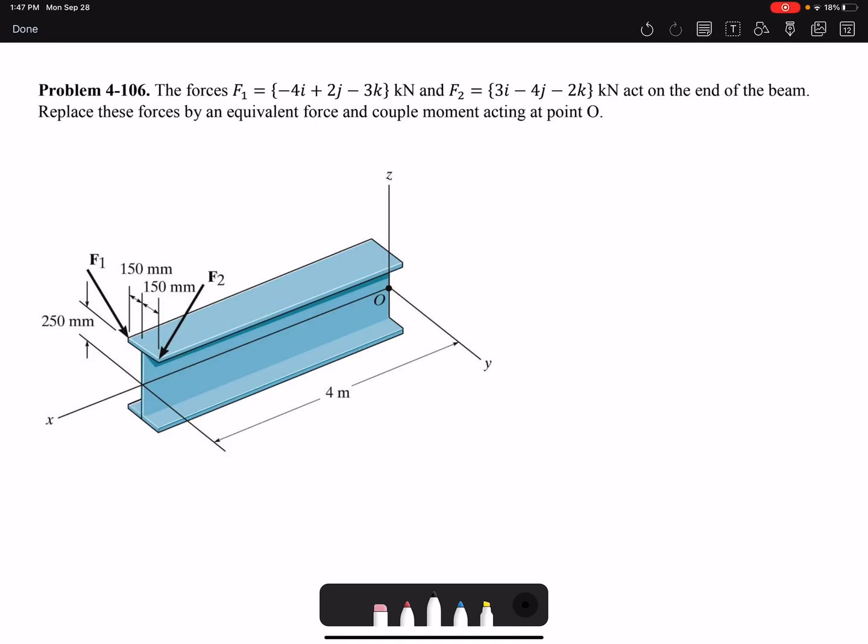Hello everyone, we are going to solve problem 106 of chapter 4. The forces F1 and F2 act on the end of the beam. Replace these forces by an equivalent force and couple moment acting at point O.